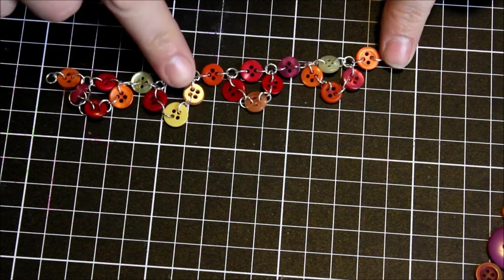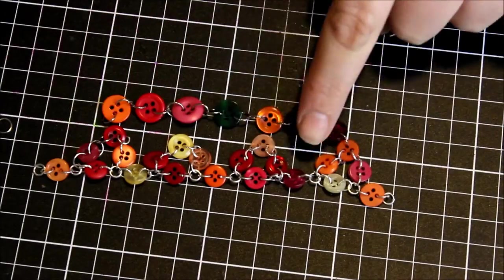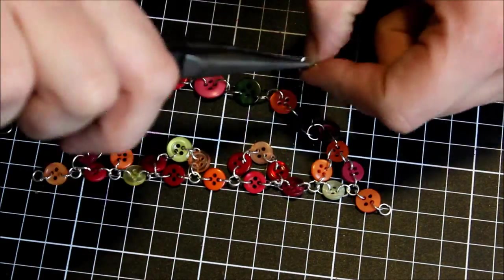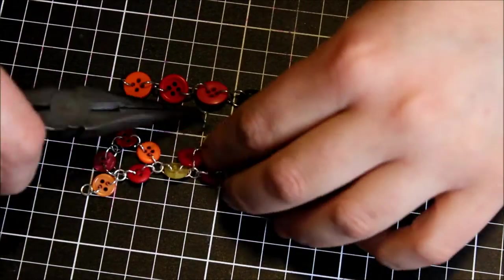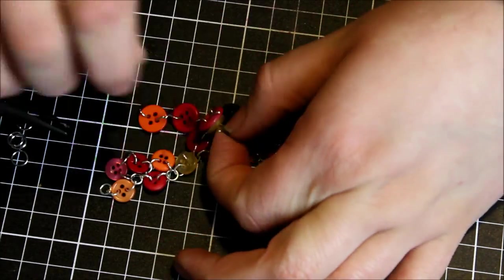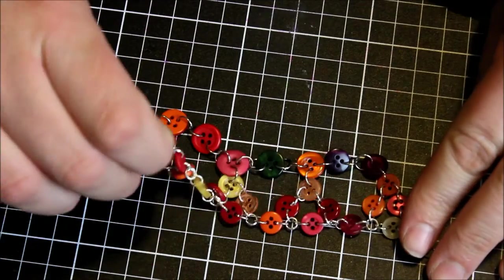Then for the third line I went ahead and created another row of buttons by just adding two links in between, connecting them through the button hole and then attaching another loop to another button, and just created the loop that way by connecting all the loops together if that makes sense.